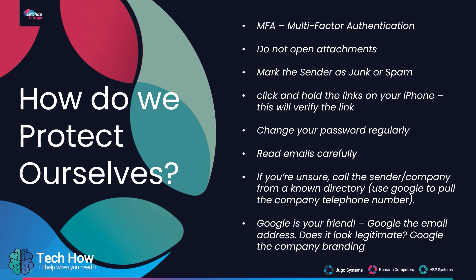Read emails very carefully and check for grammar and spelling mistakes. If you're still not sure, you can call the sender or the company the email claims to be from — but call the number found via Google rather than any number provided in the email itself. There's a chance the attacker may have placed their own telephone number in the email, so by Googling the company's official number and calling that, you'll be calling a legitimate line. Ask them if they sent the email. If they say no, this also gives them a chance to address a possible attack on their own end.